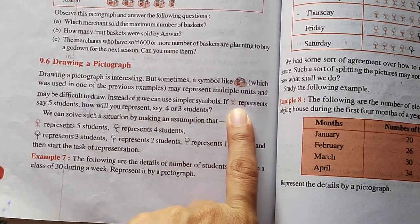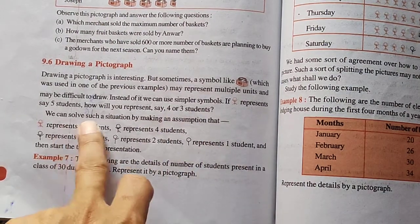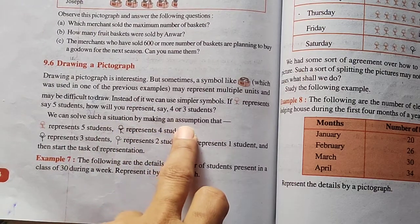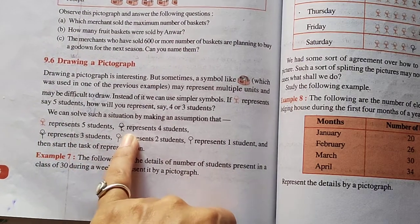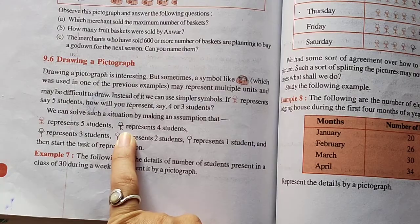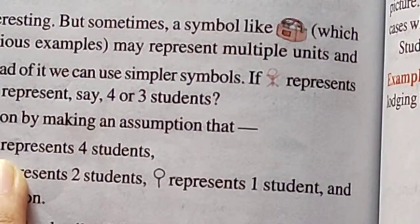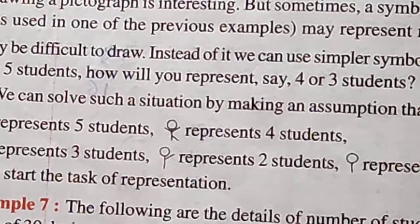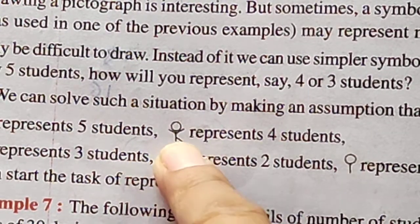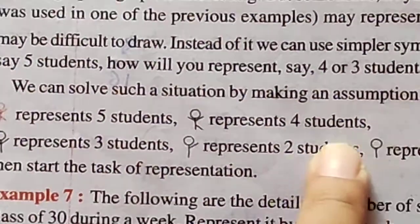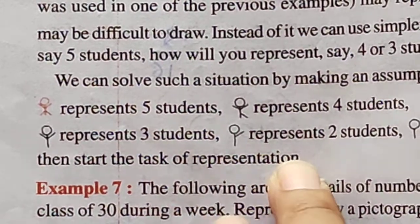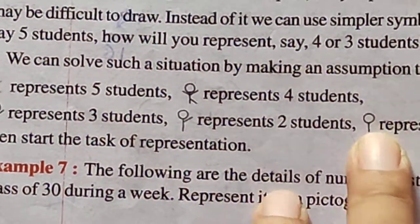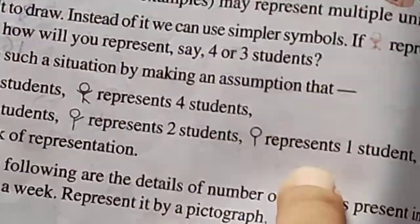If one symbol is used for five students, then for four and three students we can solve the situation by making a convention. If this complete figure represents five students, then removing one leg gives four students. Remove the second leg and it represents three students. Remove one hand and it represents two students. And the head with a standing line represents one student.